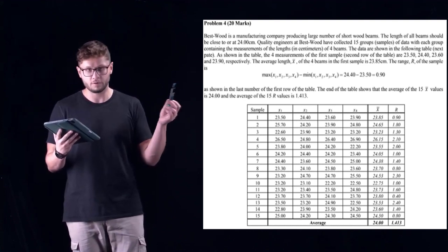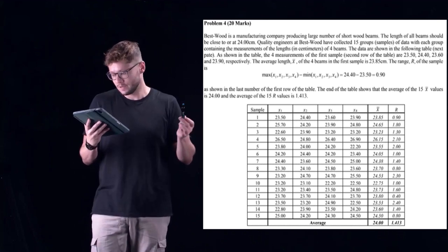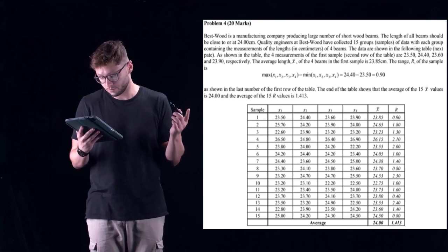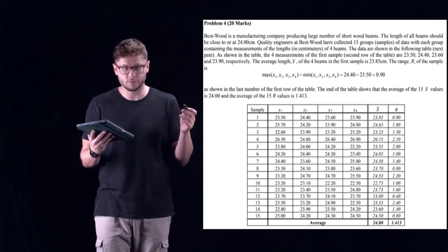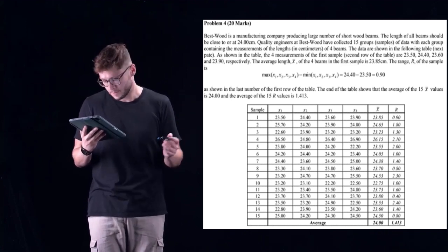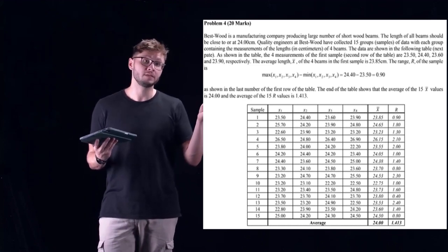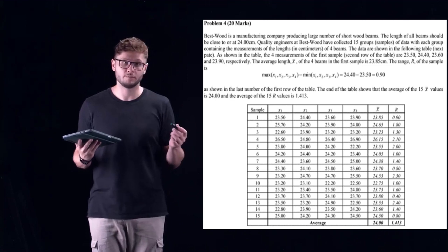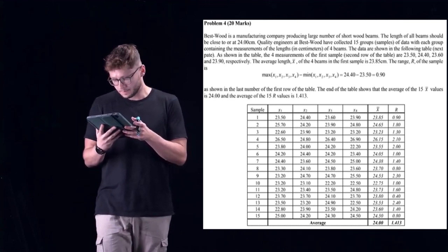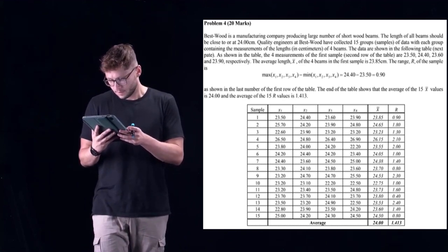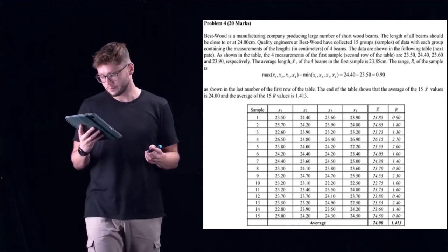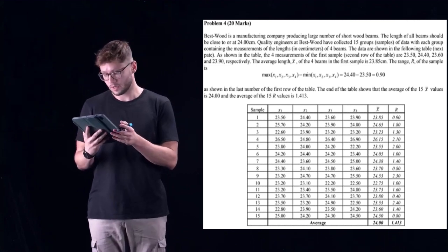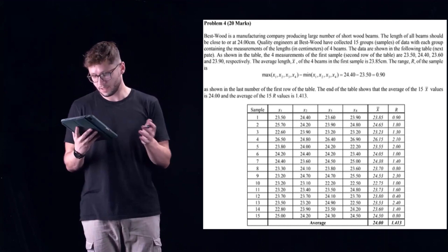As shown in the table, the four measurements of the first sample are 23 across the first row: 23.5, 24.4, 23.6, and 23.9. So the first group consists of the first four samples of beams, and it's across the first row. For each subgroup, the average x bar is shown in the second to last column, and the range is shown in the last column.